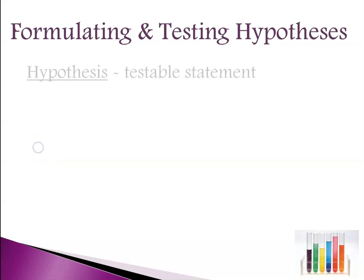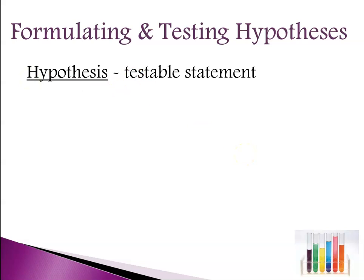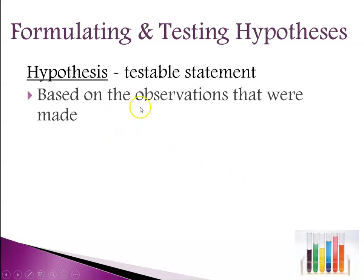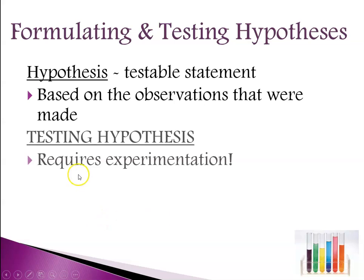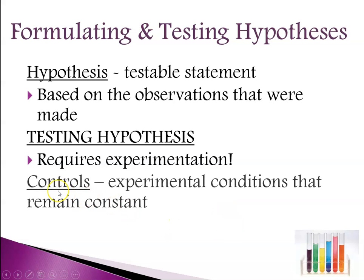We also have to talk about formulating and testing hypotheses. A hypothesis is a testable statement — meaning you can do experiments and confirm or shoot down a particular hypothesis. They're based on observations that were made. Testing a hypothesis requires experimentation; you have to do a series of experiments. And whenever you do an experiment, you're always going to have a control, keeping experimental conditions constant so that you have some understanding of what you're testing.